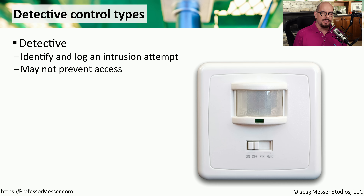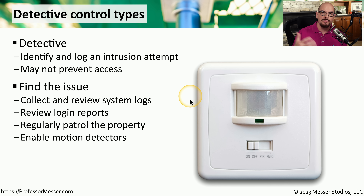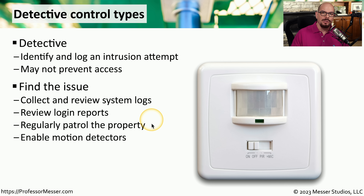A detective control type can identify and, in some cases, warn us when a particular breach has occurred. This may not prevent access, but it would give us a warning and log information about that particular attack. An example may be a process of collecting, reviewing, and going through system logs, or reviewing login reports about who's gained access to your systems. There might be someone patrolling the property looking for signs of a break-in, or you might have motion detectors so that you're automatically notified if something is moving in an area where normally there should be no motion.